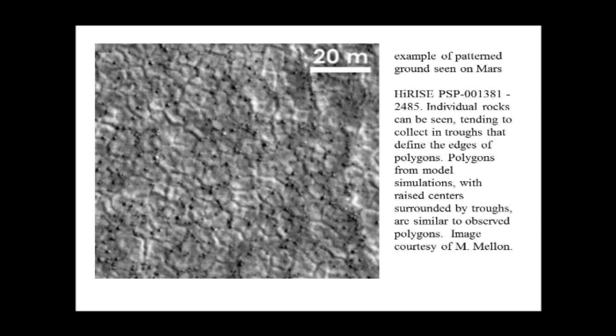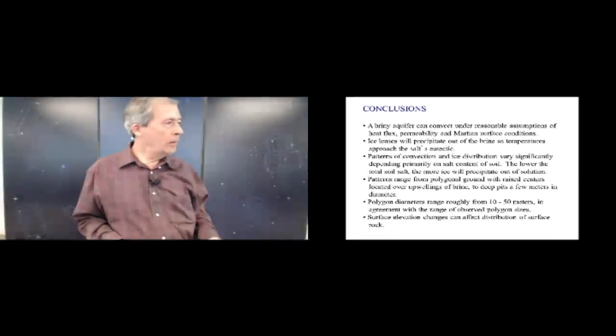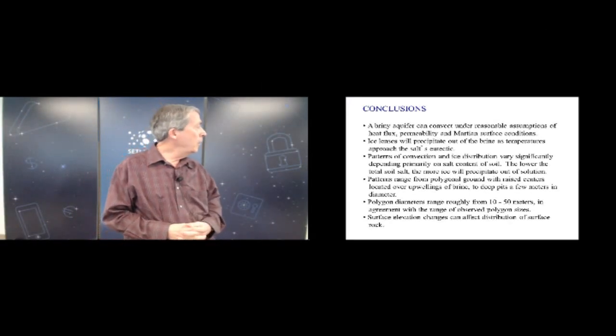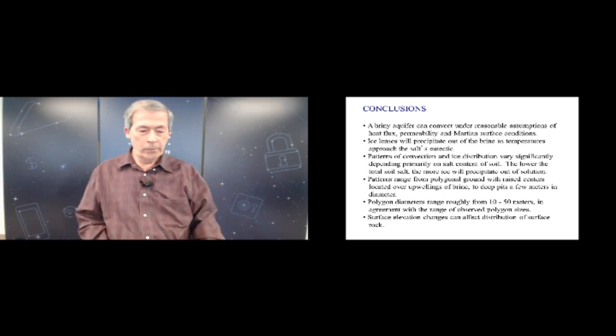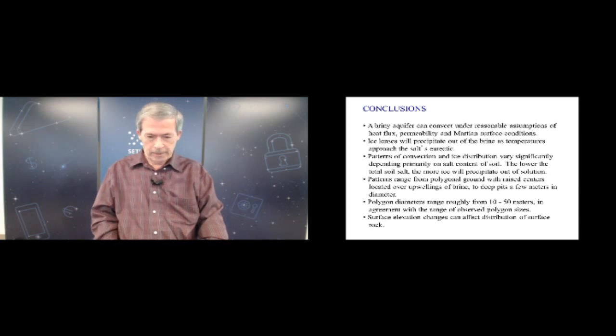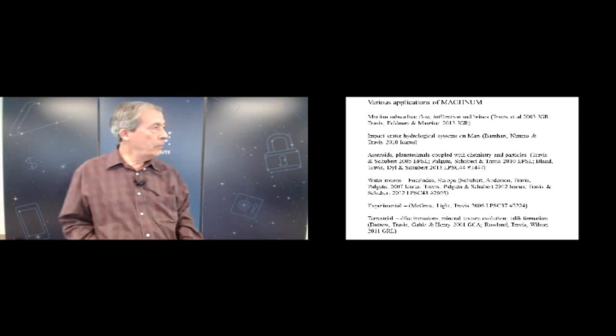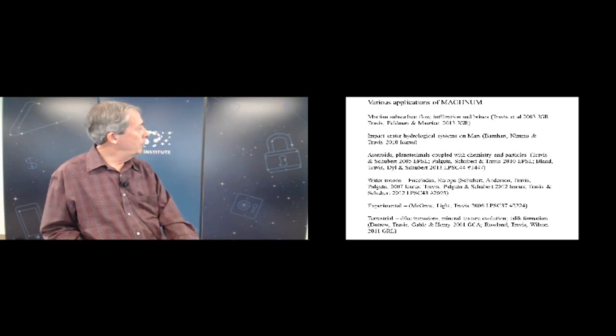So basically the result of all these simulations and experiments indicate to me anyway that you could probably have brine aquifers convecting under Martian conditions and I might even be able to relate them to some of the surface features that we see. And I don't think there's going to be time to go into any of these but let me just briefly mention some of the other applications of Magnum besides these brine simulations that we've carried out.